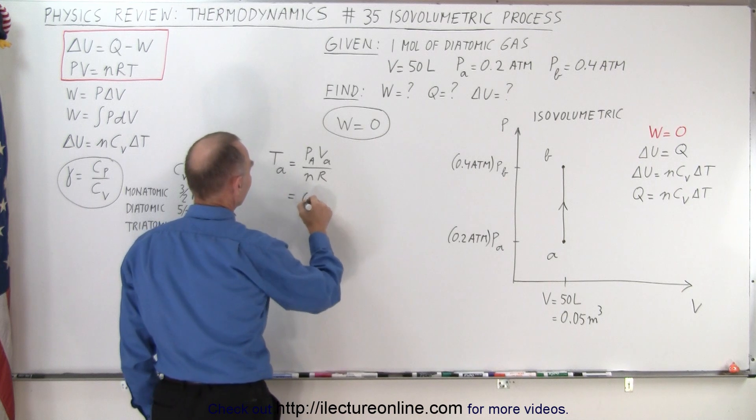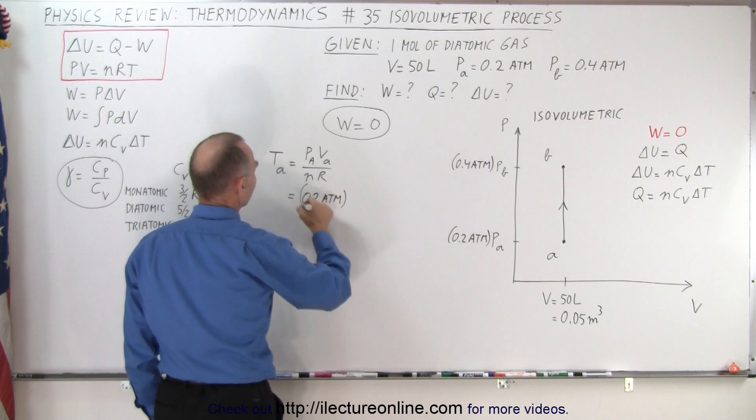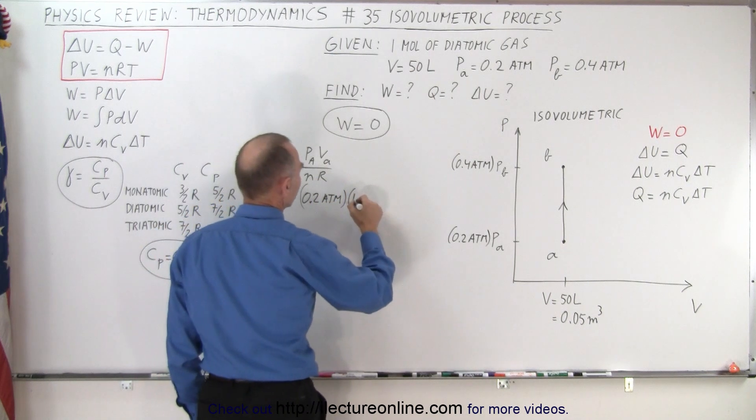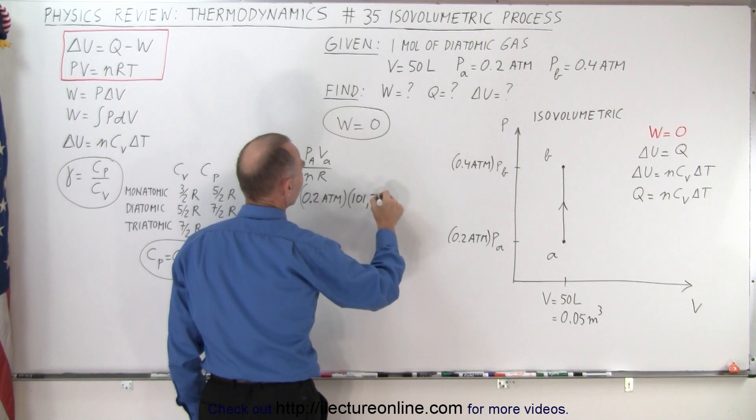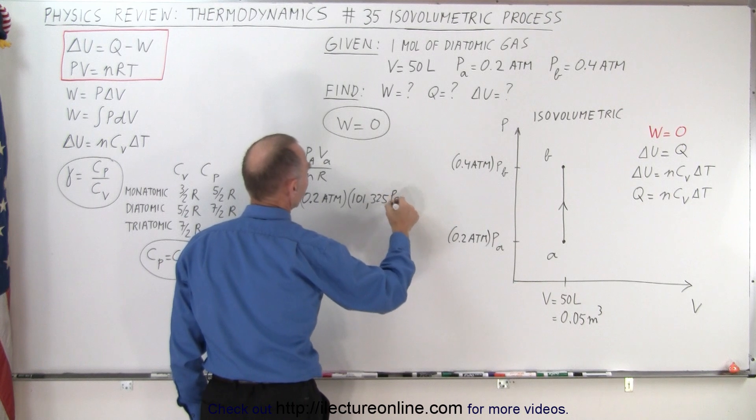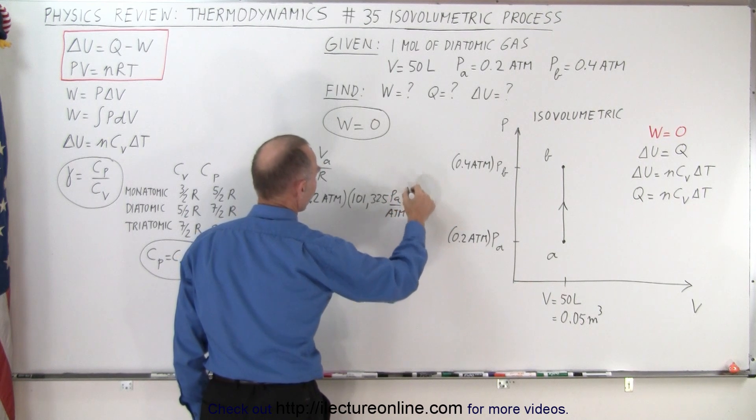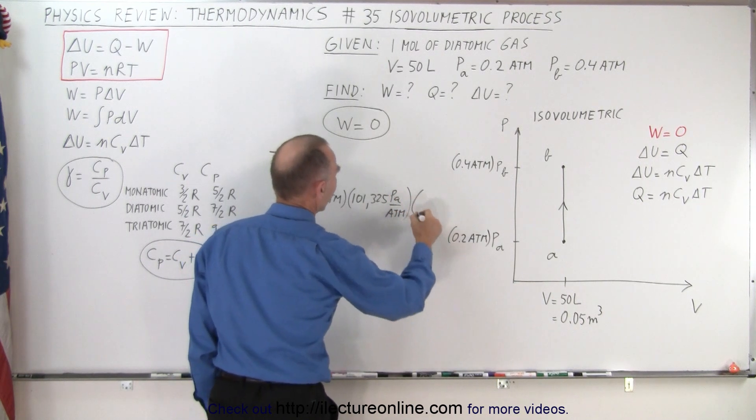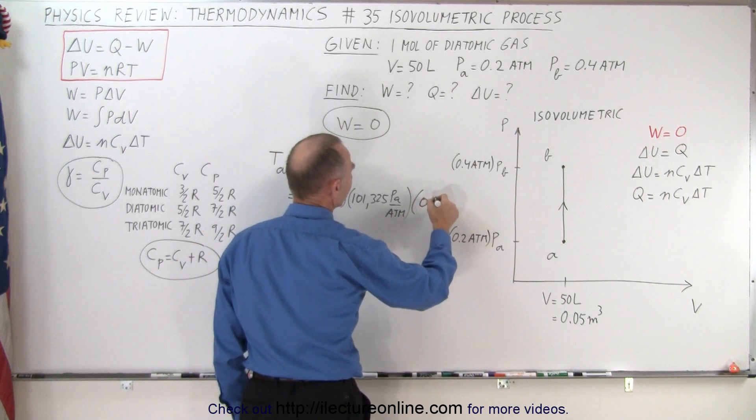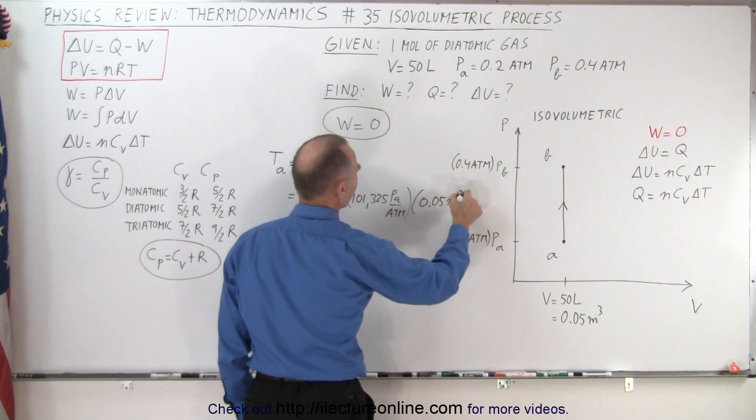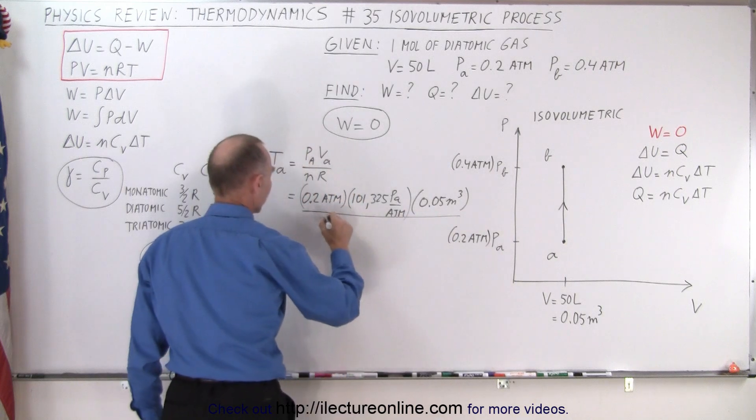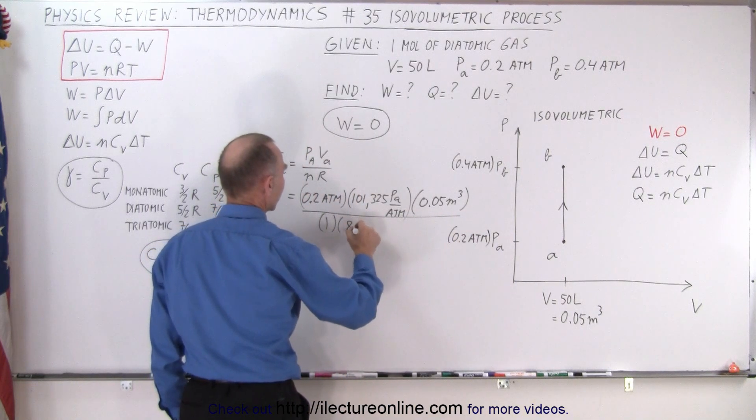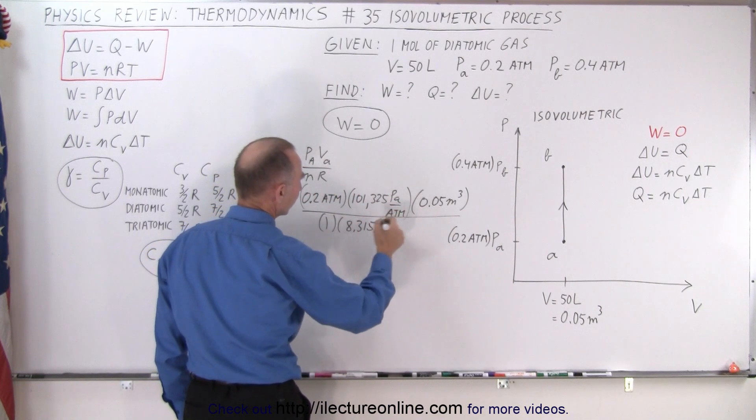Pressure at A is 0.2 atmospheres and of course we need to convert that to pascals which is 101,325 pascals per atmosphere. And we multiply times the volume in cubic meters which is 0.05 meters cubed. We divide the whole thing by the number of moles which is one and the gas constant 8.315, of course the units of the gas constant are joules per mole times Kelvin.